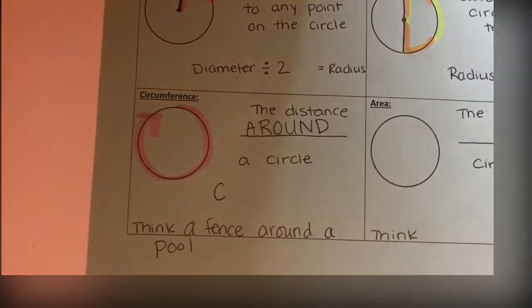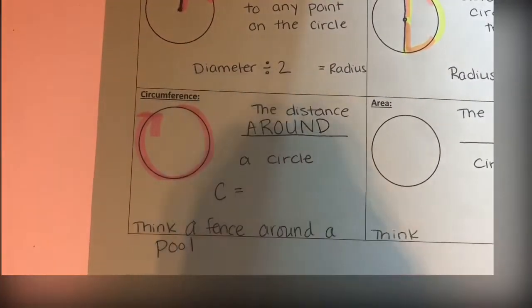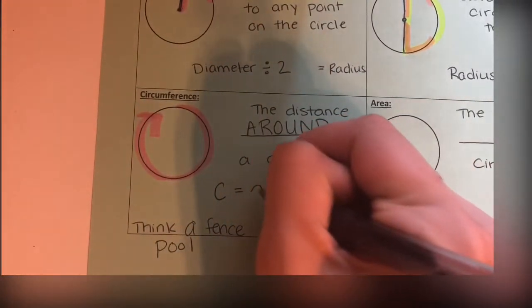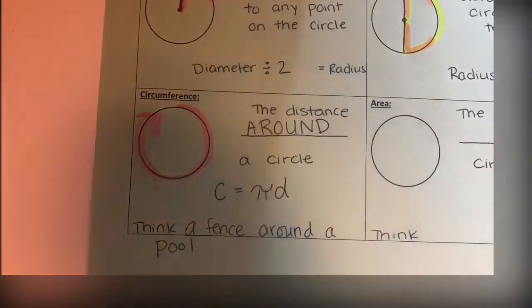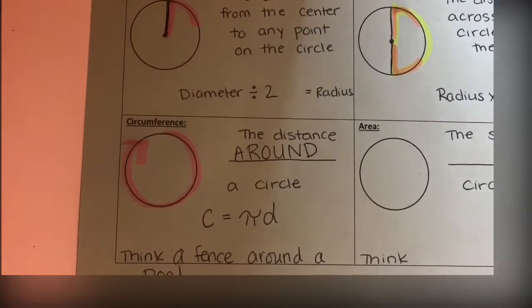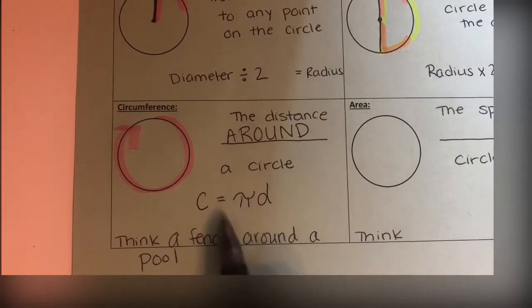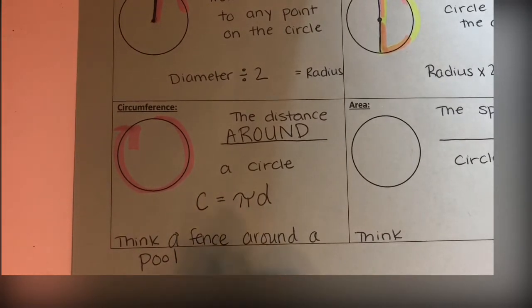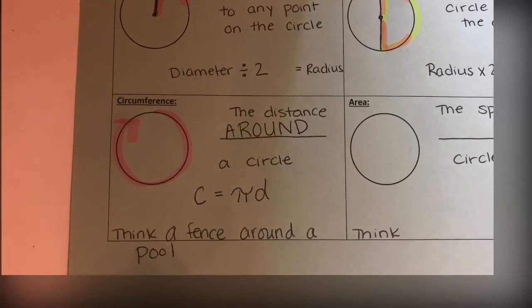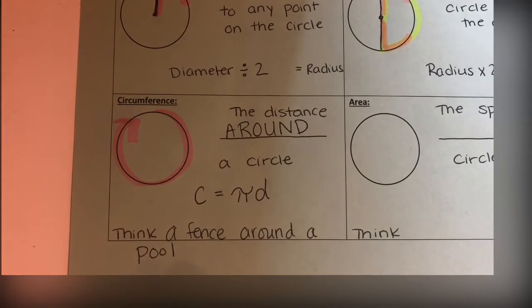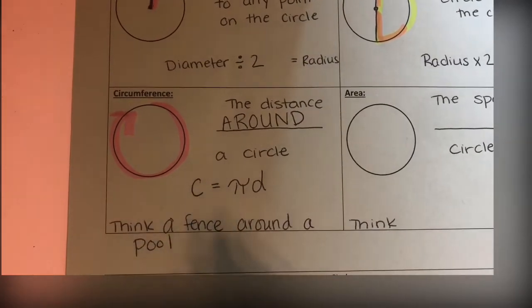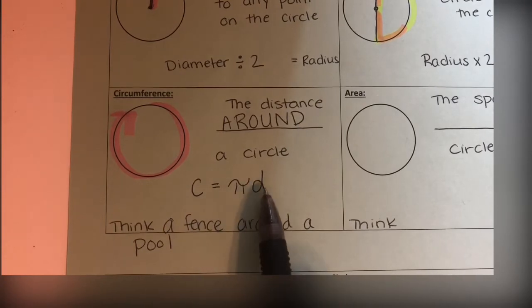This is a symbol that represents a number. What I need you to know right now about π—just for these lessons, we're going to go into π a little more soon—is that π equals the number 3.14. So really, this is C = 3.14 times whatever diameter they give you.